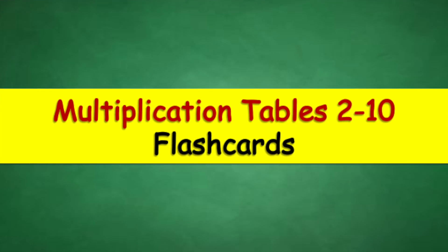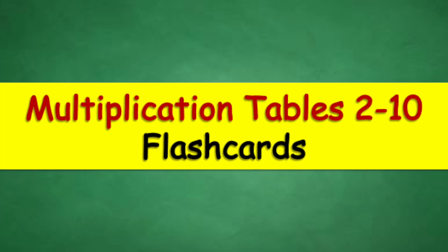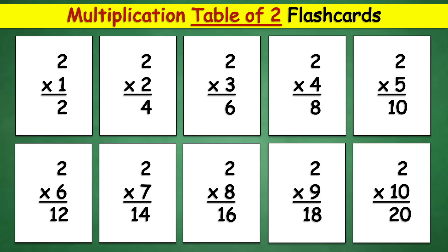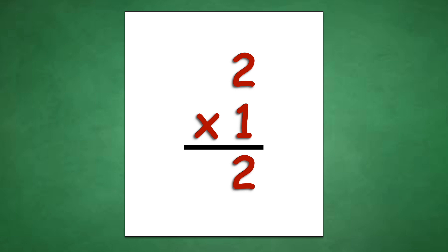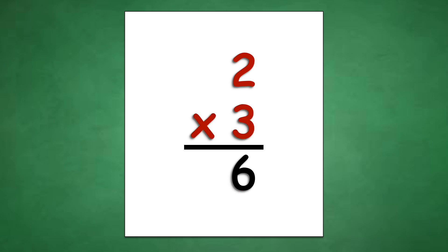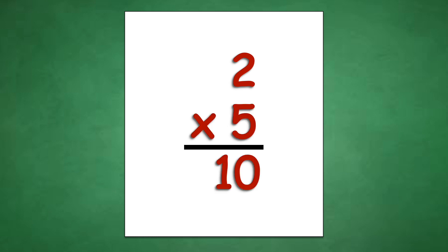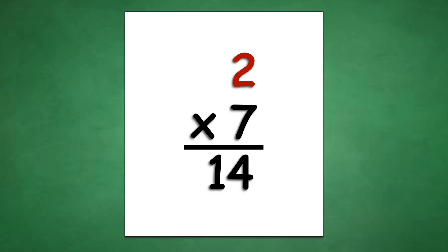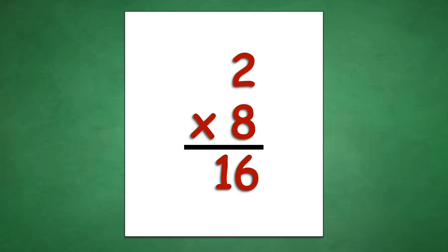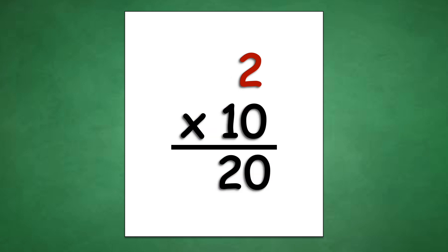Abacada multiplication tables 2 to 10 flashcards. Multiplication table of 2: 2 times 1 equals 2, 2 times 2 equals 4, 2 times 3 equals 6, 2 times 4 equals 8, 2 times 5 equals 10, 2 times 6 equals 12, 2 times 7 equals 14, 2 times 8 equals 16, 2 times 9 equals 18, 2 times 10 equals 20.